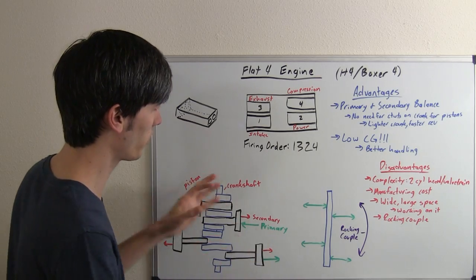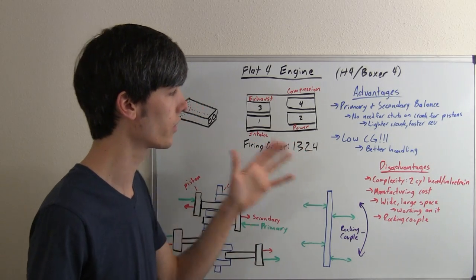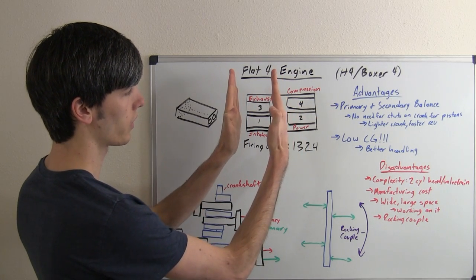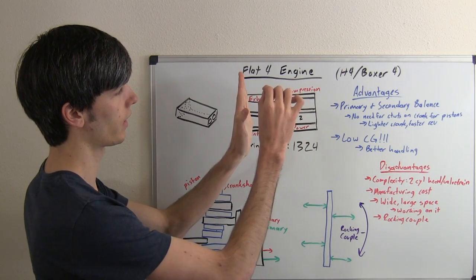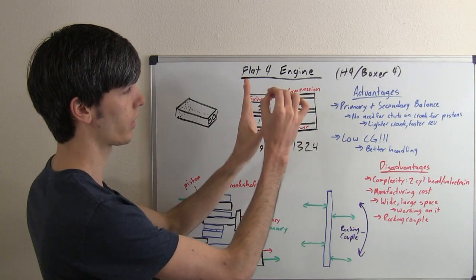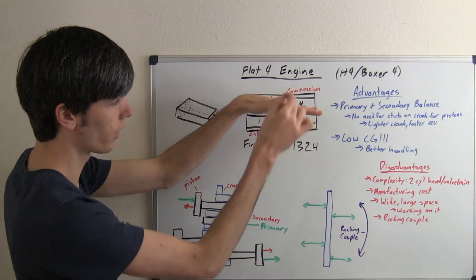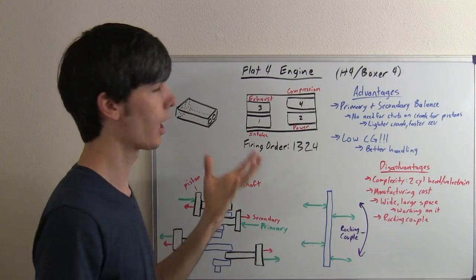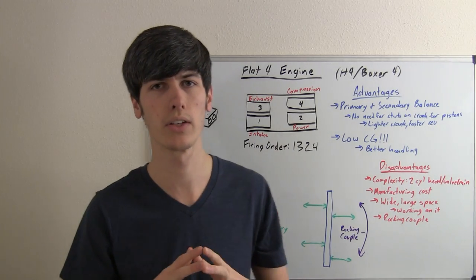The other massive benefit to flat four engines is the center of gravity is so low. You take this vertical engine where you've got your piston cylinder device, and an inline engine where the center of gravity is very high, and you turn it down, so it greatly decreases that center of gravity. By doing that - the engine is one of the heaviest components in your car, and by lowering it,